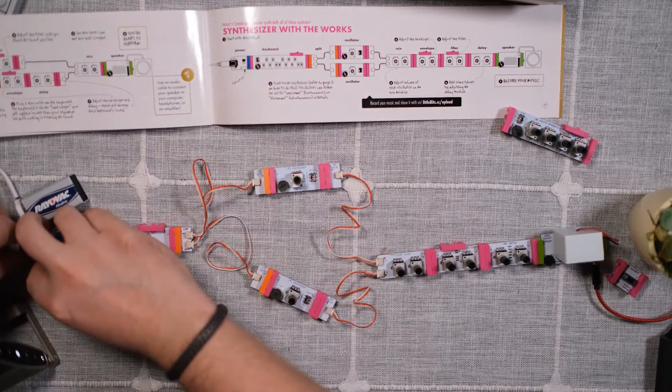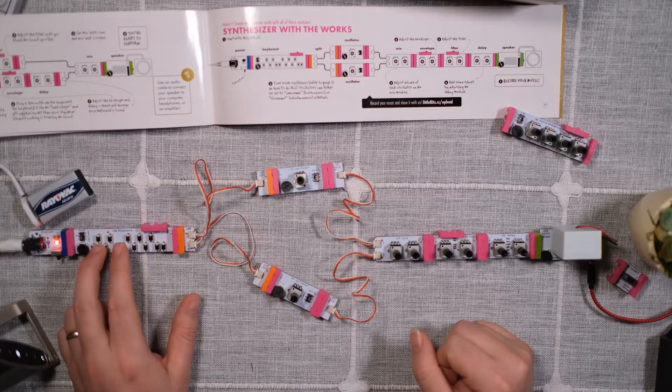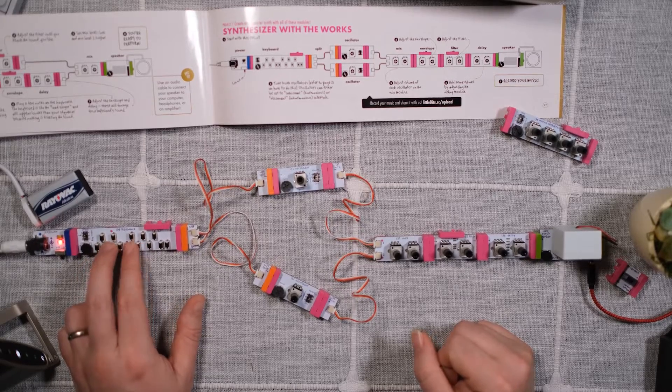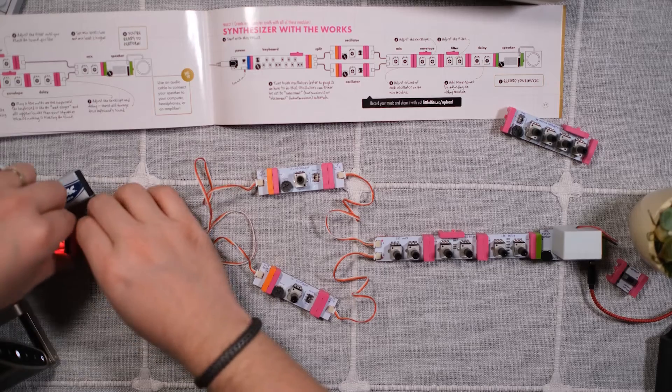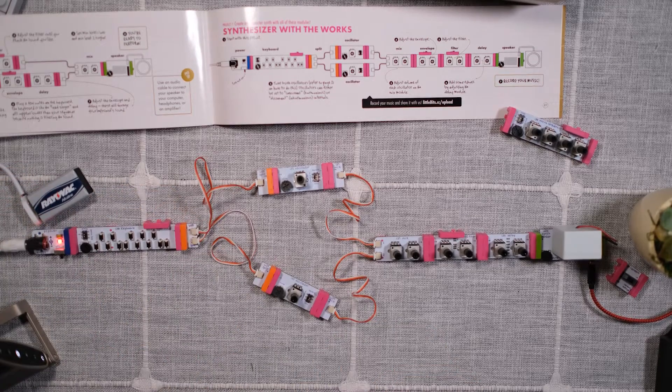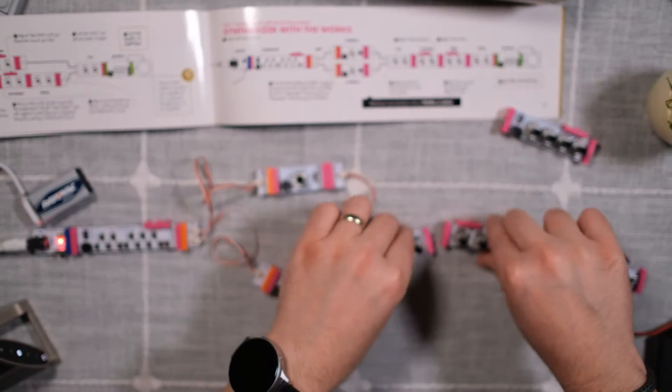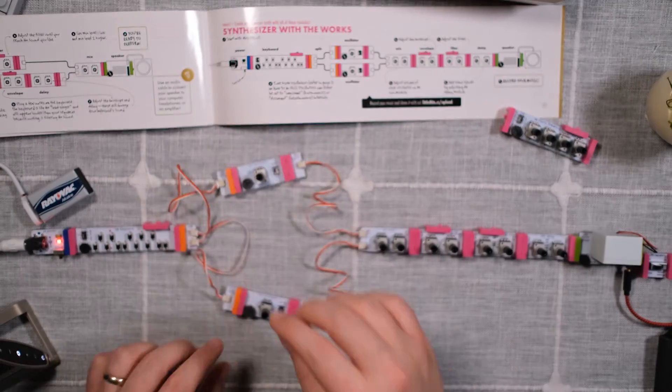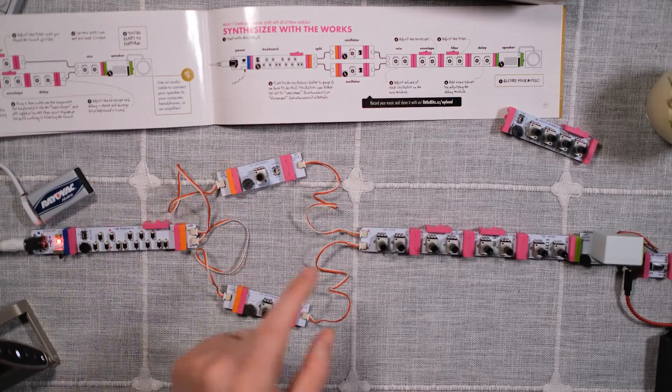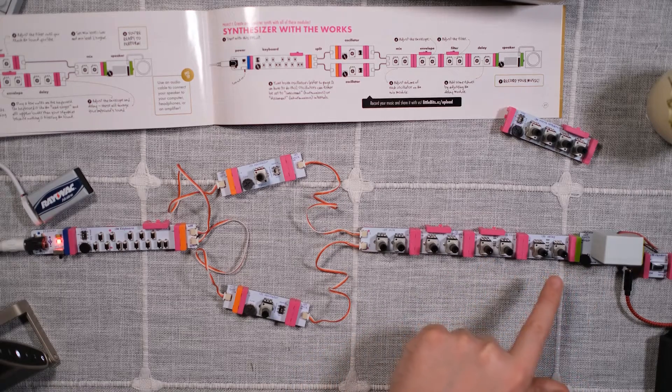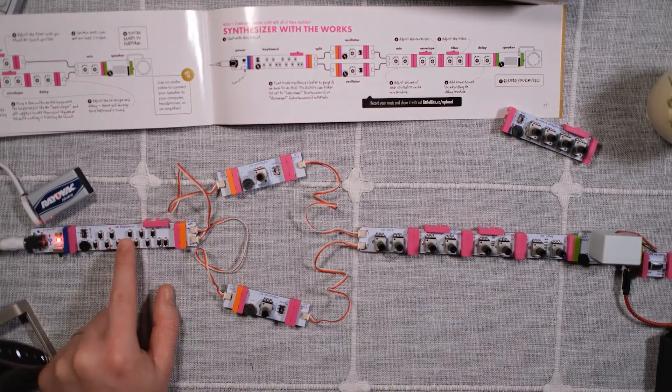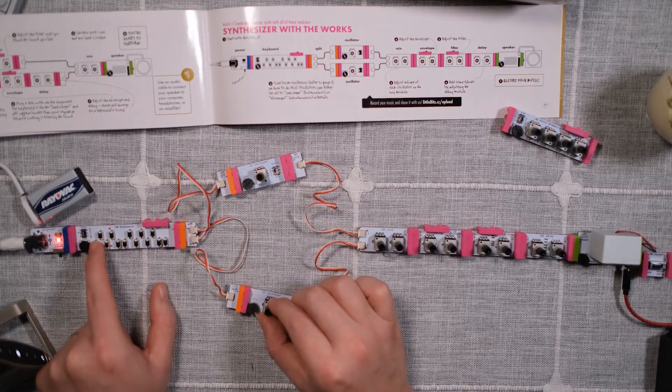Okay, so let's see what that sounds like. Now the reason why that sounded terrible was because I forgot to put the envelope in. So I got keyboard, two oscillators, mix, envelope, filter, delay, and output. So now we just have to tune them so that they sound pretty equal. There, and now they're a little detuned as well.